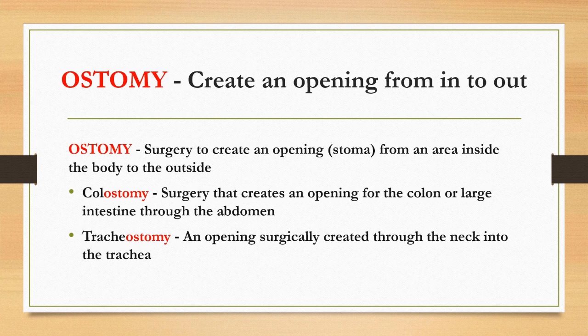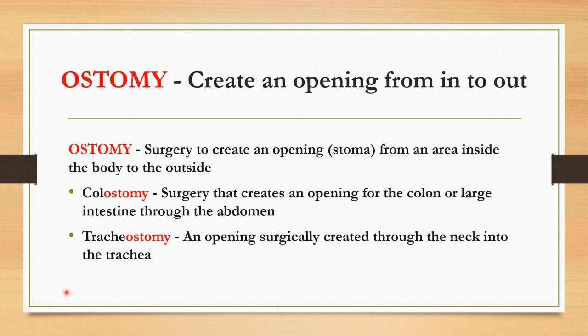The next one is '-ostomy' which means surgery to create an opening — called a stoma — from an area inside the body to the outside. For instance, colostomy — surgery that creates an opening for the colon or large intestine through the abdomen. Tracheostomy — an opening surgically created through the neck into the trachea. The difference between -otomy and -ostomy is that in -otomy they are creating an internal incision, whereas in -ostomy the opening goes from inside the body to the outside and is visible externally — that opening is termed a stoma.